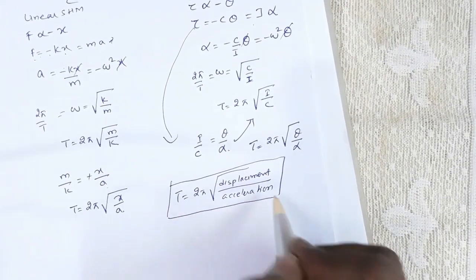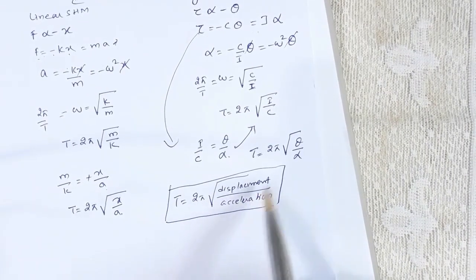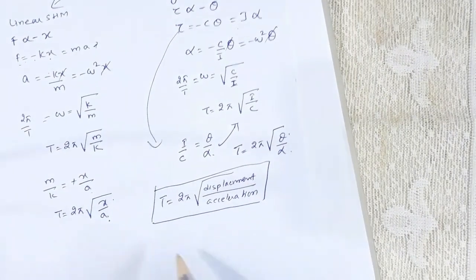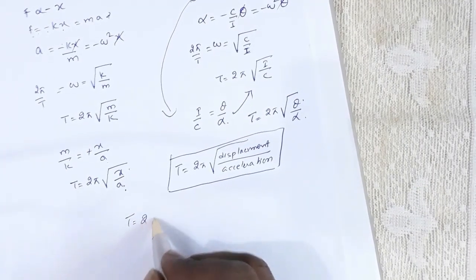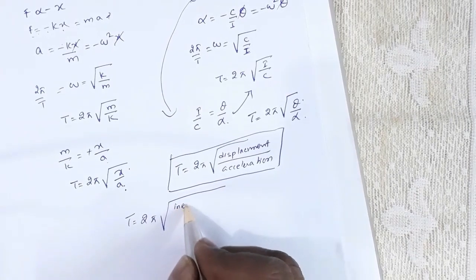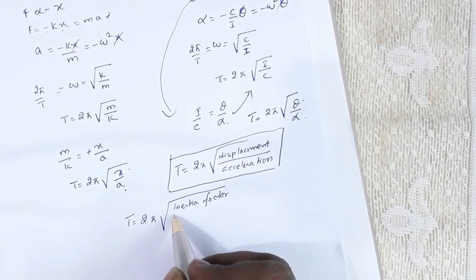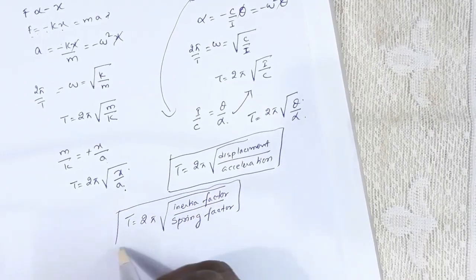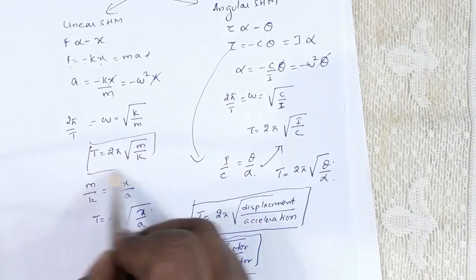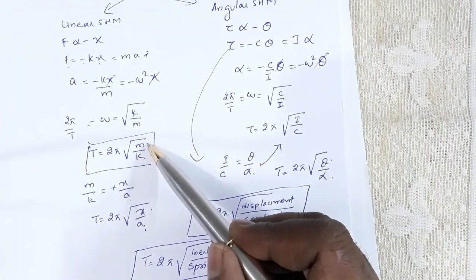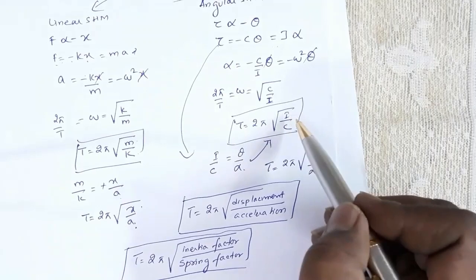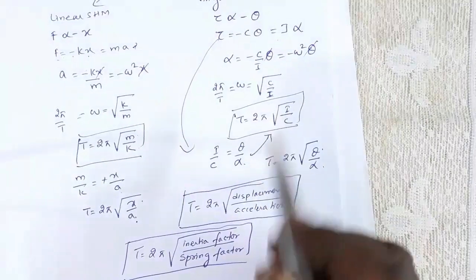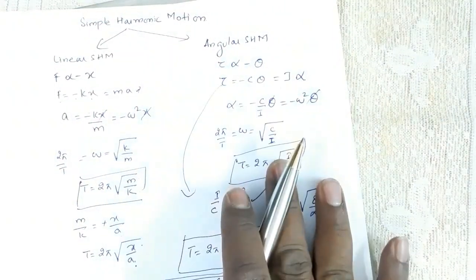This is one form of writing the expression for time period: T = 2π√(displacement/acceleration) — linear displacement by linear acceleration for linear SHM, angular displacement by angular acceleration for angular SHM. Another way of expressing this is T = 2π√(inertia factor / spring factor). For linear SHM, T = 2π√(m/k) where m is the inertia factor and k is the spring factor. For angular SHM, T = 2π√(I/c) where I is the moment of inertia.